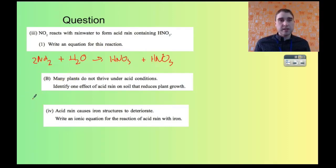The second question says many plants do not thrive under acid conditions. Identify one effect of acid rain on soil that reduces plant growth. Here I could talk about the toxic cations being mobilized by the acid rain.